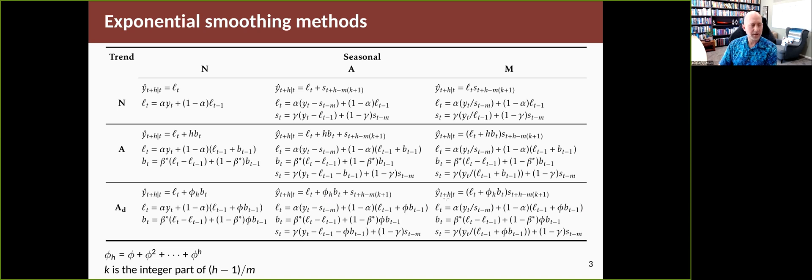They're very similar. If you're looking at the level equation you'll see that it's always of the form α times something plus (1-α) times something. If there's no seasonality then the α is always times yt like this in all three examples. If there is seasonality then the first term is y minus s or y divided by s in all of these examples. You can spot patterns, and as you spot the patterns you'll begin to understand how the various equations fit together.